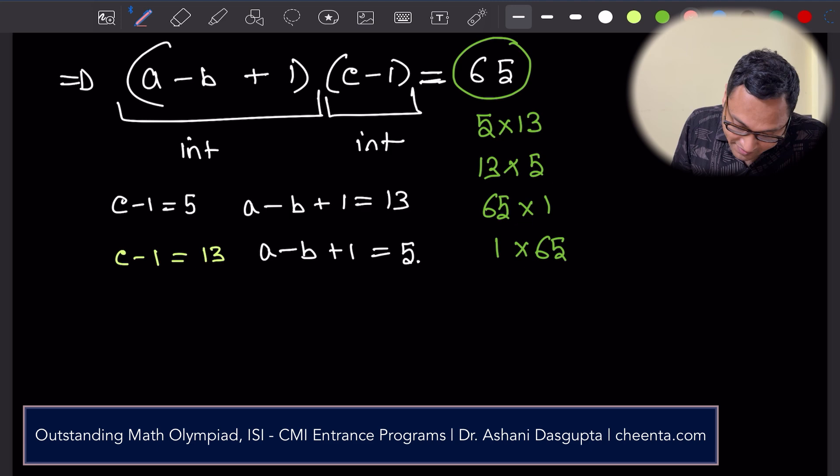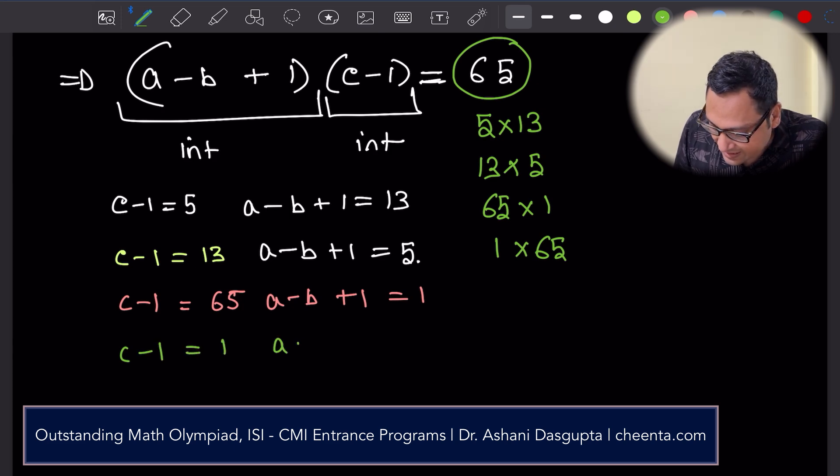Similarly the other possibility could be c - 1 equals 65, a - b + 1 equals 1, and finally the last one: c - 1 equals 1 and a - b + 1 equals 65.